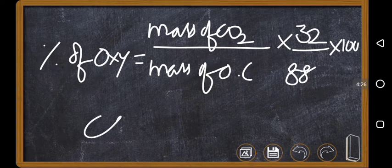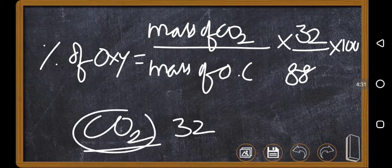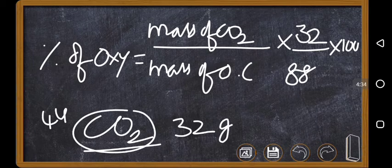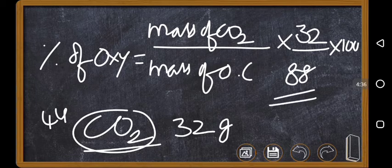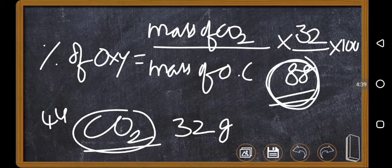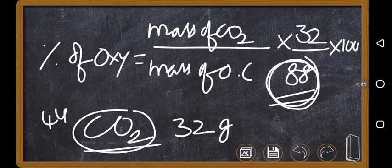Normally what we feel is carbon dioxide contains 32 grams of oxygen—that means molecular mass 44, with 32 grams of oxygen—so we expect 32 by 44 here. But it's 32 by 88 because first carbon is converted to carbon monoxide, then carbon monoxide is converted to carbon dioxide.